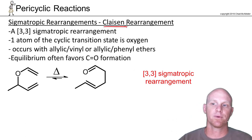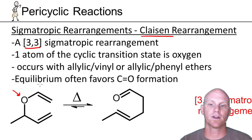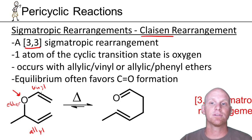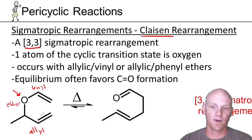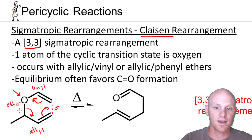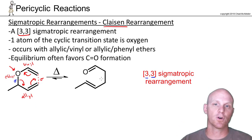The Claisen rearrangement is also a 3,3 sigmatropic rearrangement, just like the COPE, but the big difference is that oxygen is one of the ring atoms. Generally, you'll have a vinyl allyl ether. This is a thermal condition reaction. We have a cyclic movement of electrons — forming a bond here, breaking one and forming another, forming a new sigma bond. I'm forming a new sigma bond in this position and breaking one over here. Counting 1-2-3 on each side — hence, it's a 3,3 sigmatropic rearrangement.